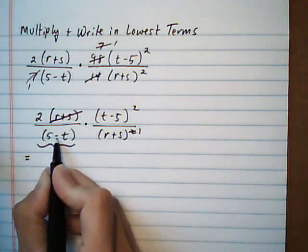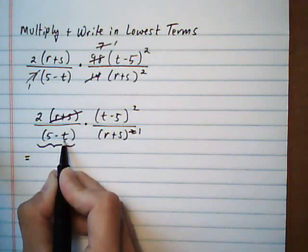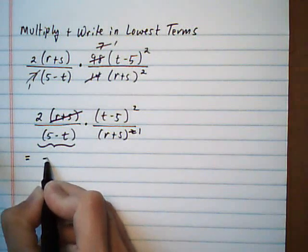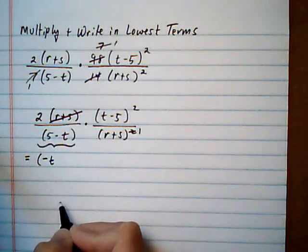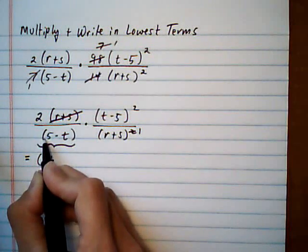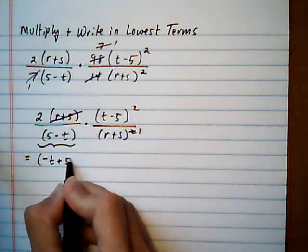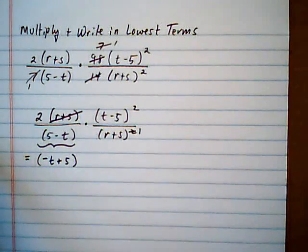Now when you reorder something, take the sign in front of the term with it. So if I move the t to the front, the negative comes with the t. And the 5 has a positive in front of it. So it would be minus t plus 5.